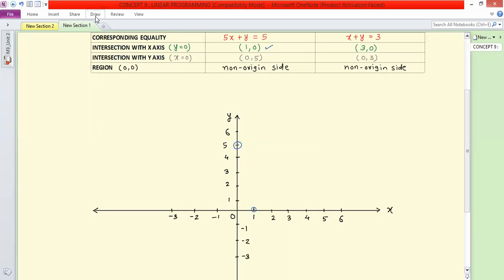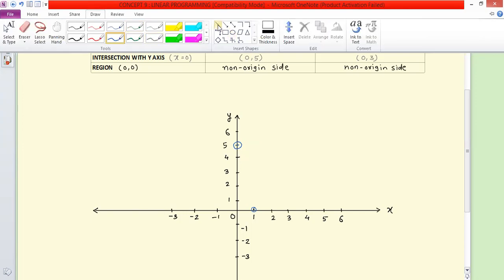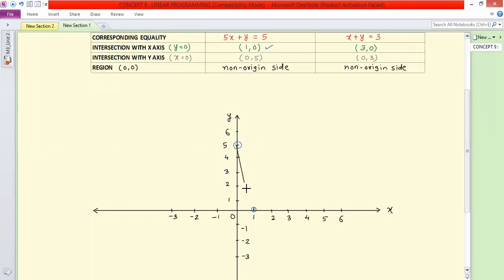So this is your (1,0). Next, (0,5). So this is your (0,5). Now we need to draw one line through these points.